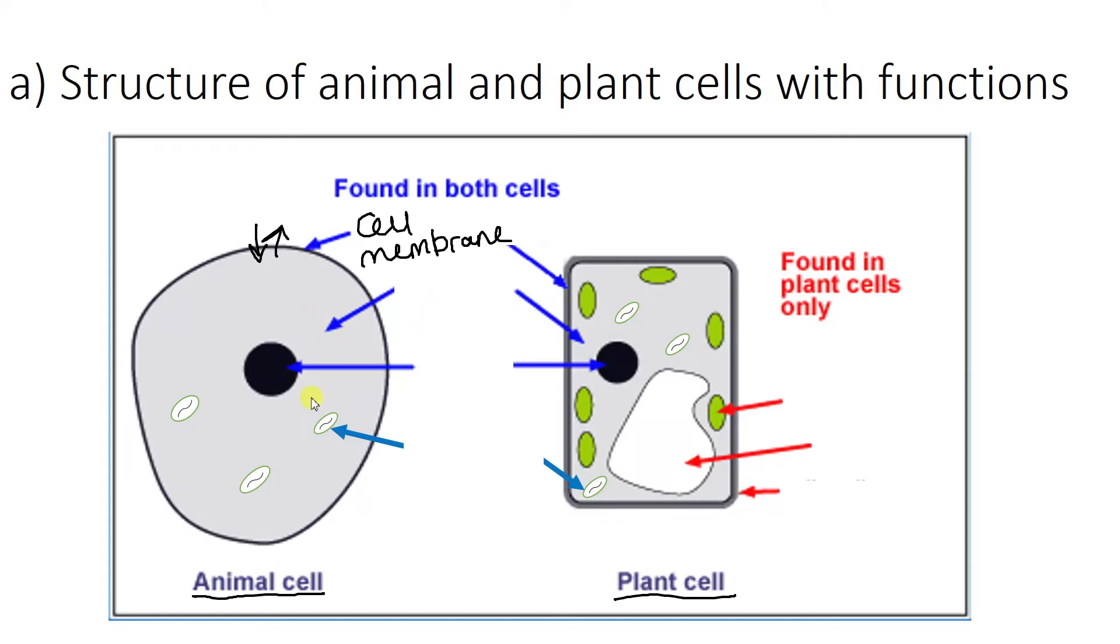The next thing they both have is this jelly-like substance where everything lives on the inside. We call this the cytoplasm, and the cytoplasm is basically just the site of most chemical reactions. So there's this big space in the middle where most of the chemical reactions take place.